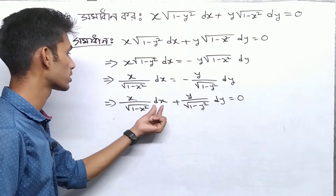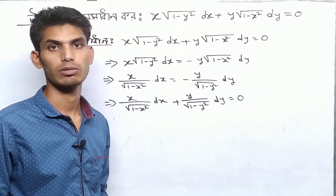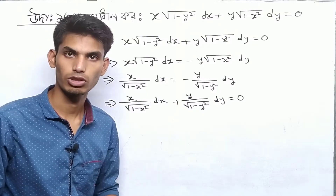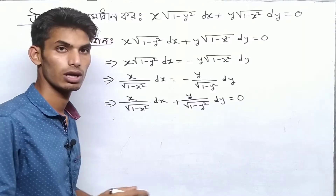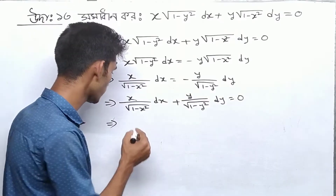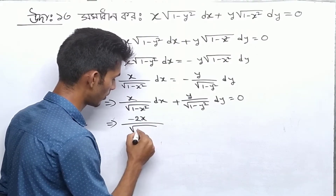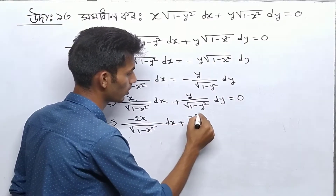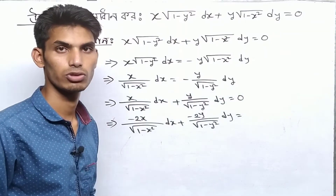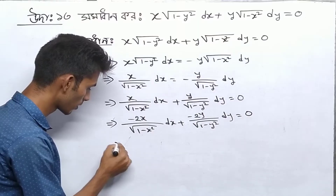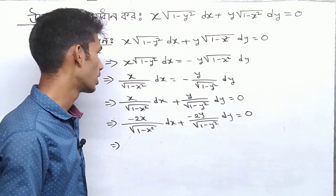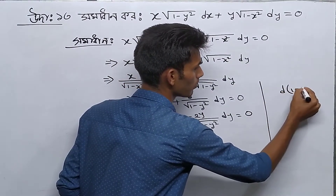We will see how a line will spread the points and limit them. We have to add minus 2x plus 1 minus x squared into x, plus minus 2y plus 1 minus y squared into y, and add minus 2.